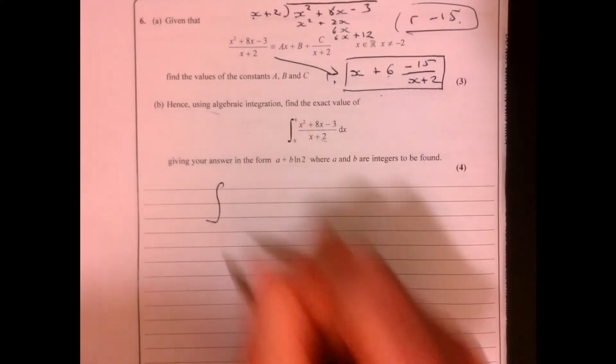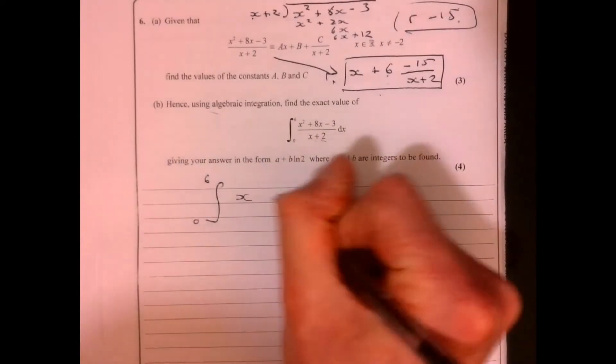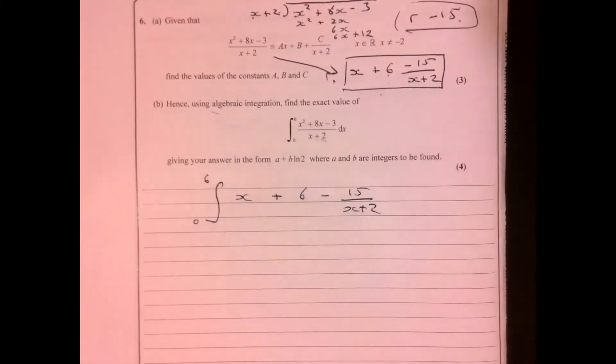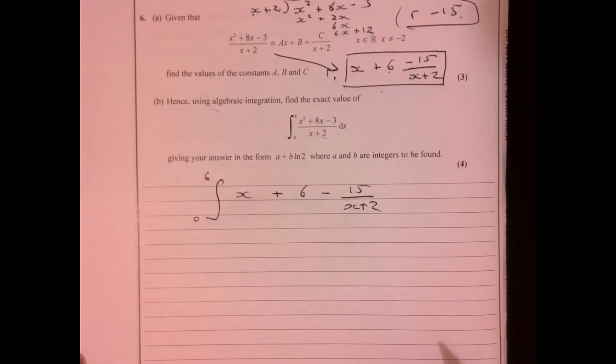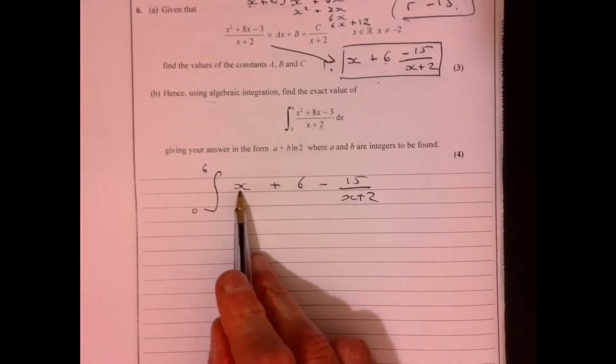Let's integrate this over here. So let's rewrite. We're going to integrate between 6 and 0, we've got x plus 6, and we've got minus 15 over x plus 2. Now, all of these bits we can do individually.